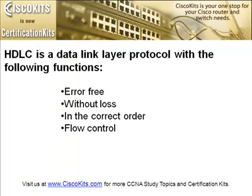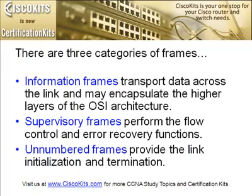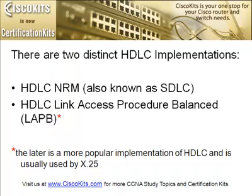There are two distinct implementations of HDLC. Number one, we have HDLC-NRM, which is also known as SDLC. Then we have HDLC Link Access Procedure Balanced, or LAPB. LAPB is a bit-oriented synchronous protocol that provides complete data transparency and full duplex point-to-point operation. It supports a peer-to-peer link in that neither end plays the role of the permanent master station. HDLC-NRM, on the other hand, has a permanent primary station with one or more secondary stations.